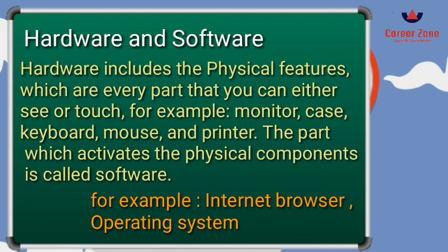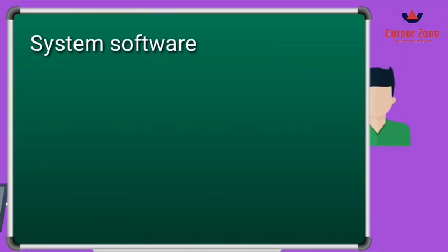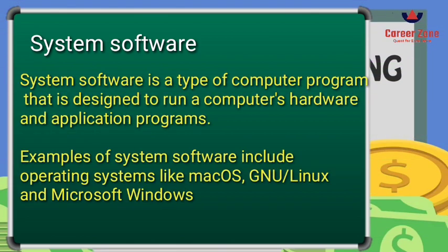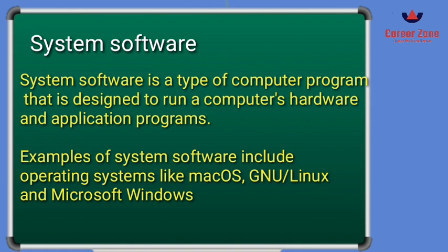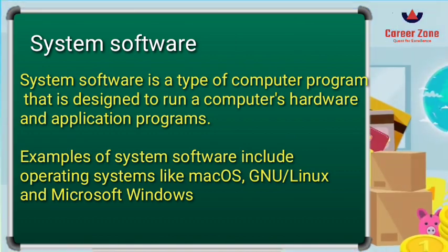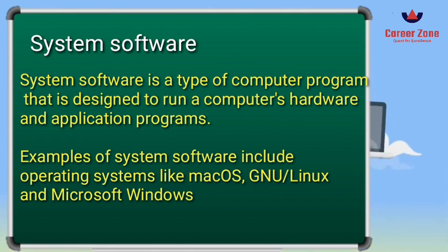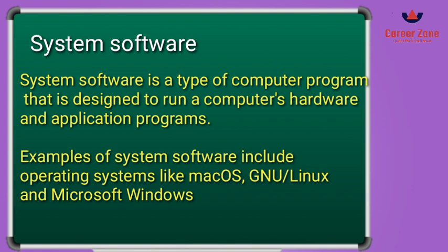Softwares are divided into different parts. The first is system software, which is a kind of computer program designed to run the hardware and application programs. The operating system is called system software. Any operating system — like Mac OS, Linux, Microsoft Windows, or Unix — is categorized under system software, which makes your system operational.